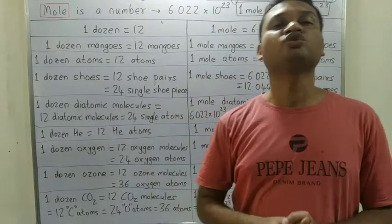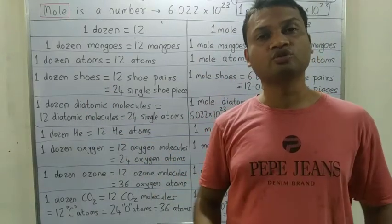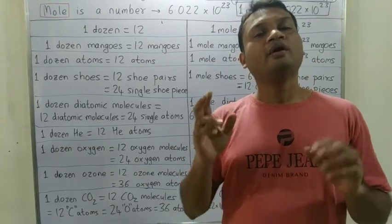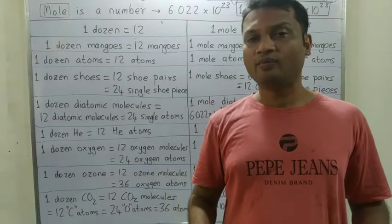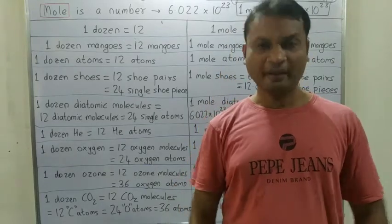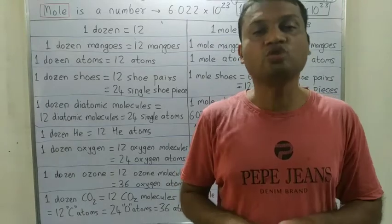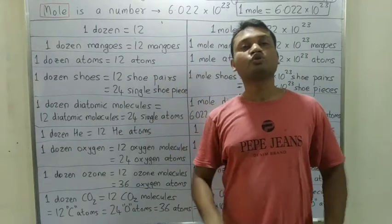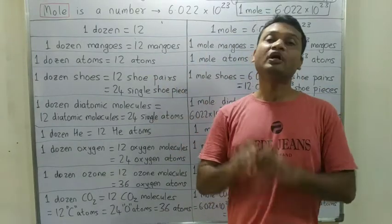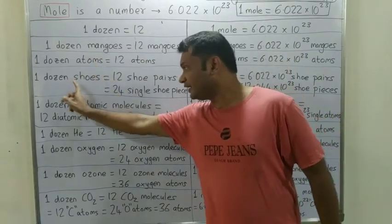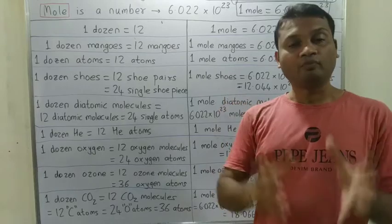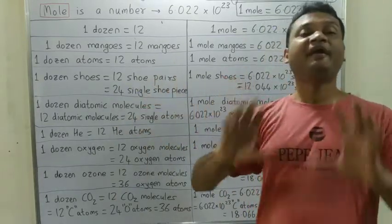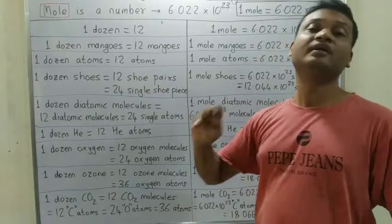Then — one dozen shoes. Now when we buy shoes, we always get them in pairs. A 'pair' of shoes means two shoes. So one dozen shoes means 12 shoe pairs, which is 24 single shoe pieces. If I said one dozen shoes, to 12 shoe pairs aenge, which is 24 single shoes.